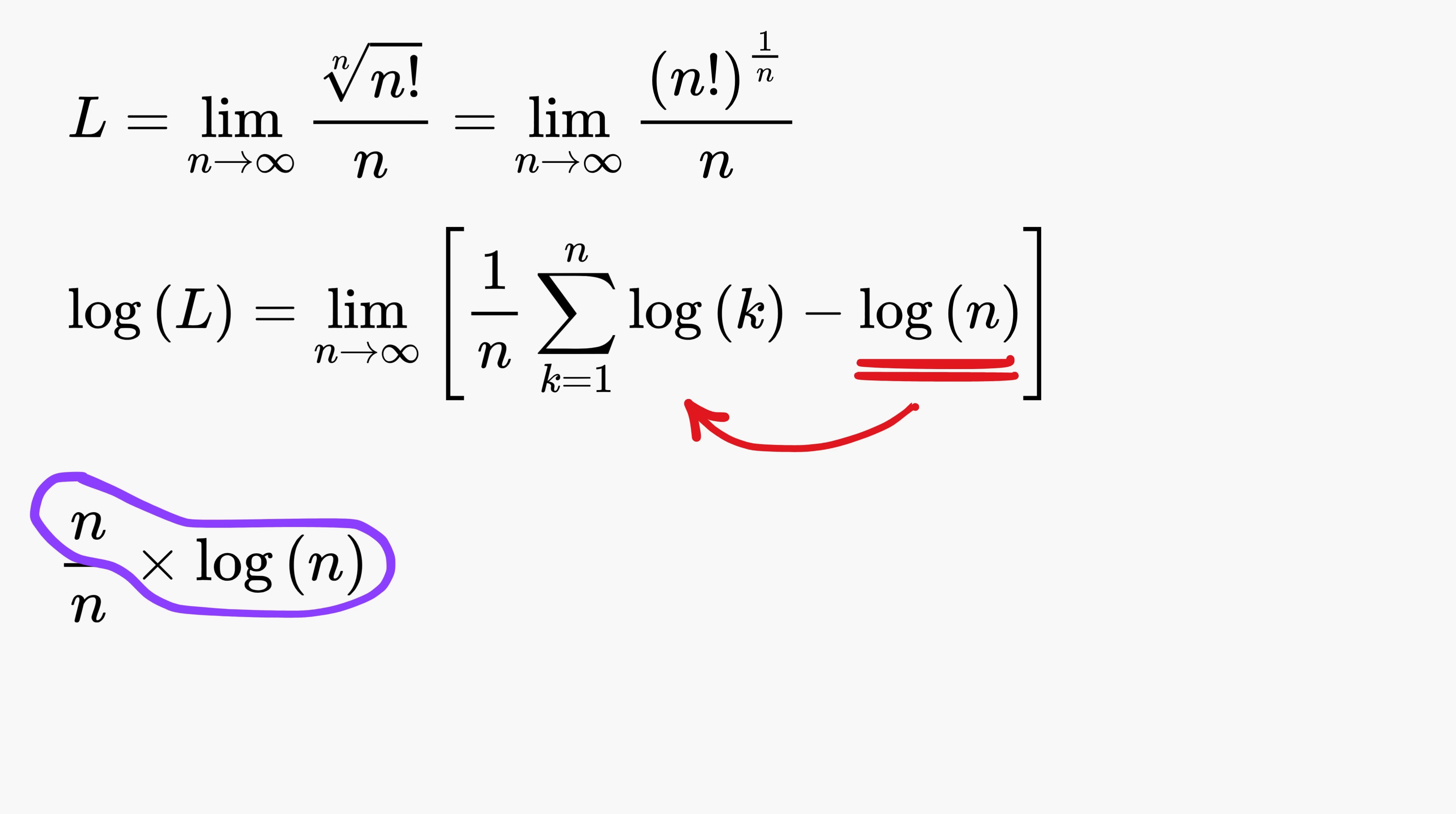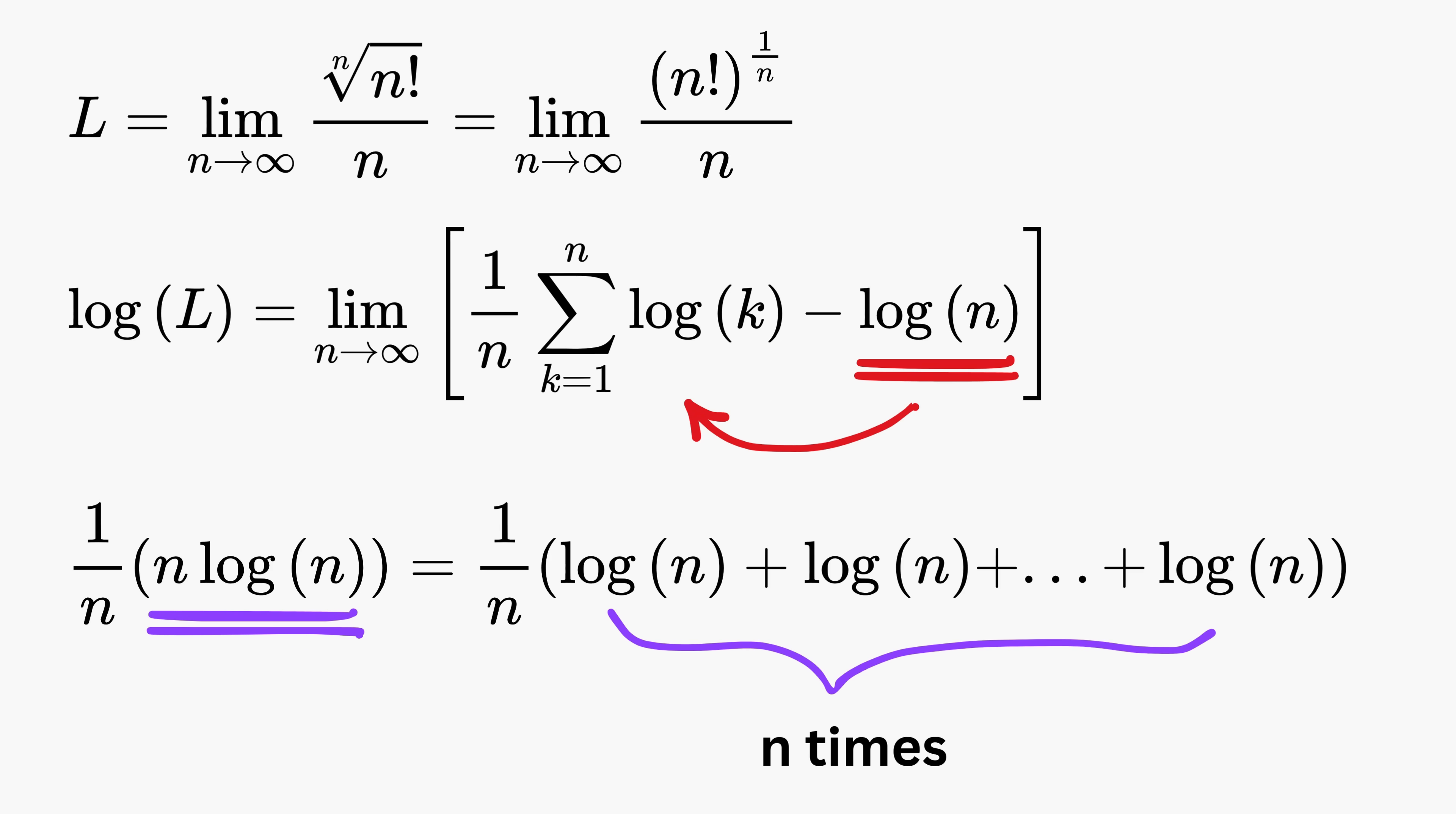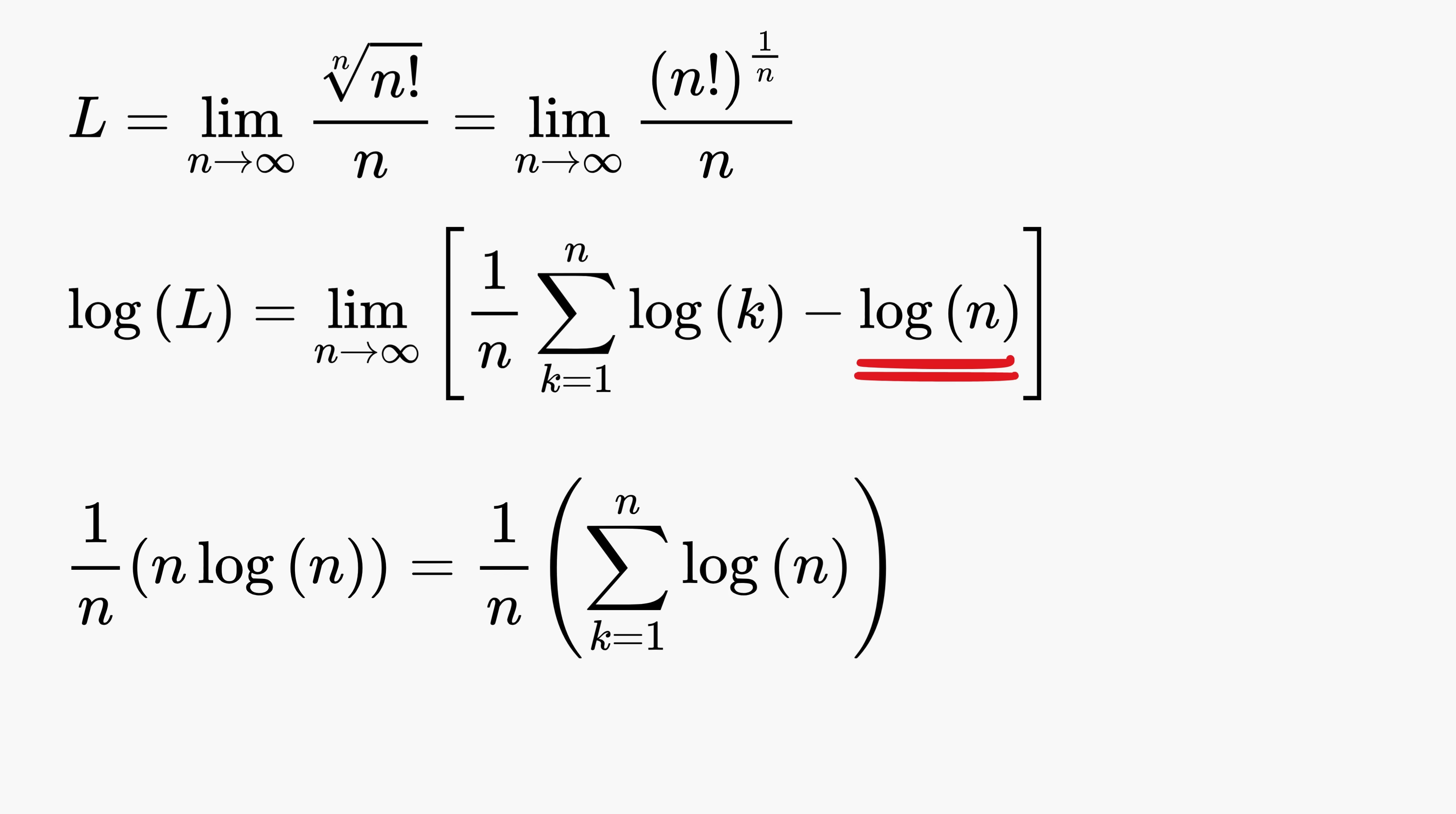Now group this n and log(n) together in this manner. This allows us to think of log(n) as being added to itself n times. In other words, n log(n) can be written as a summation k equals 1 to n of log(n).